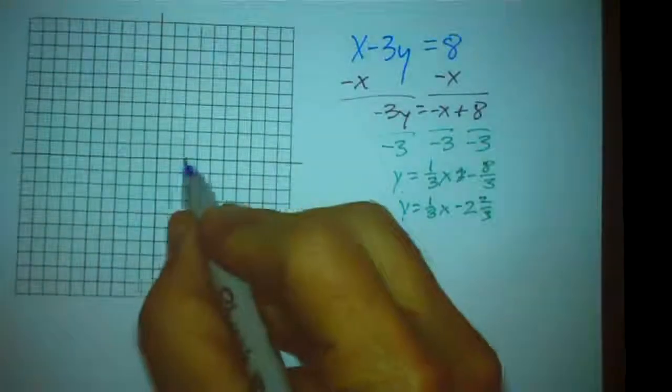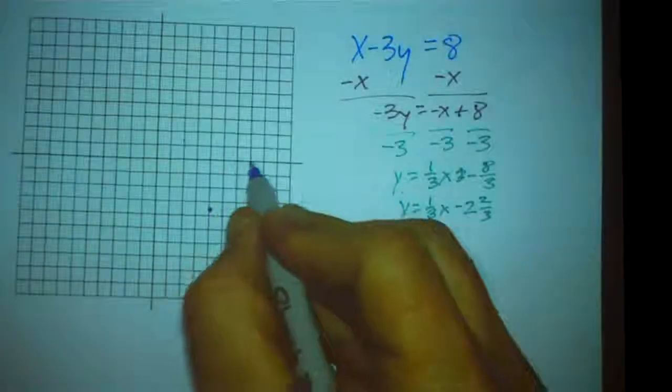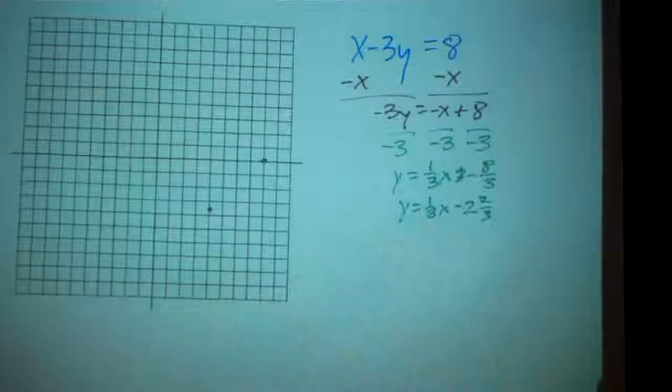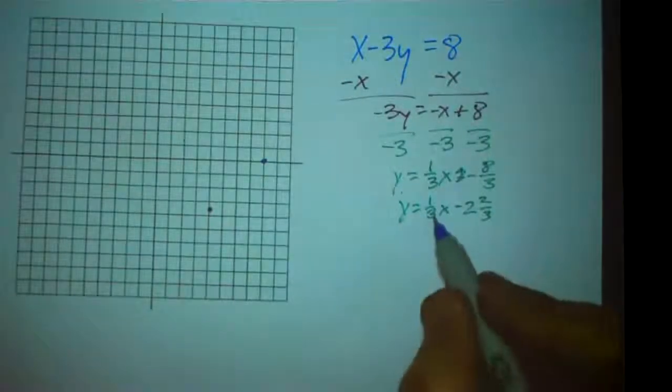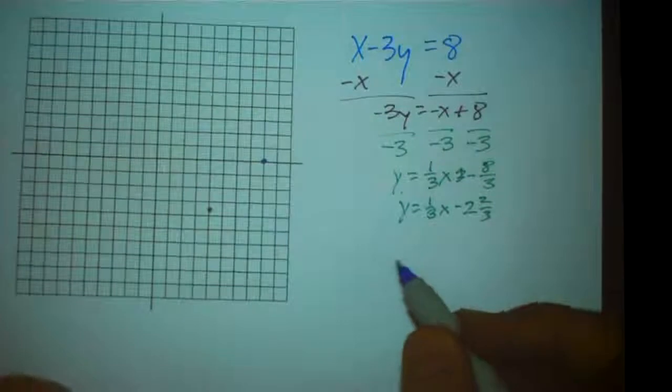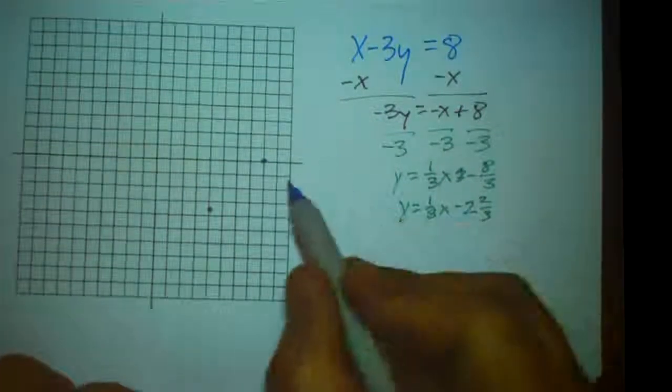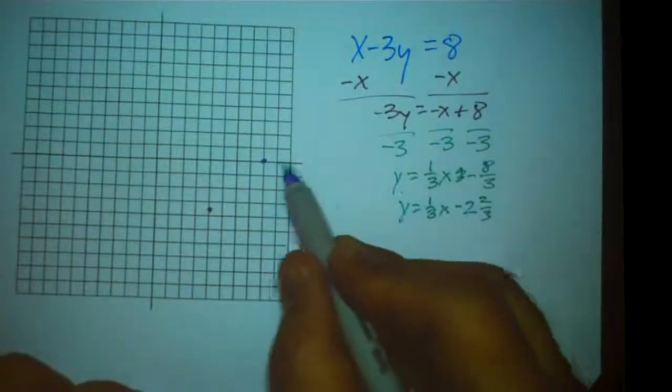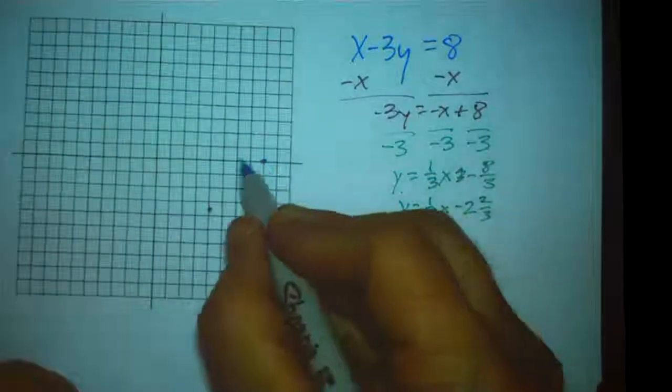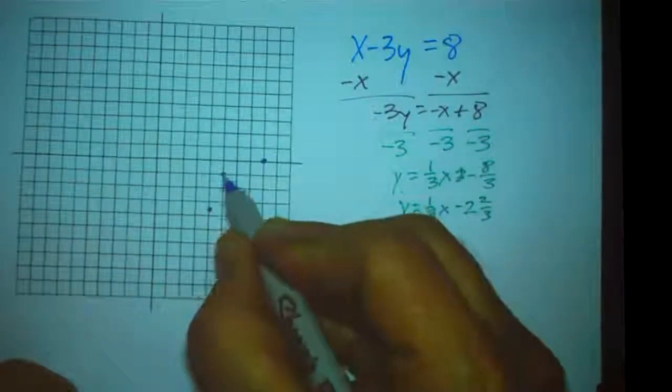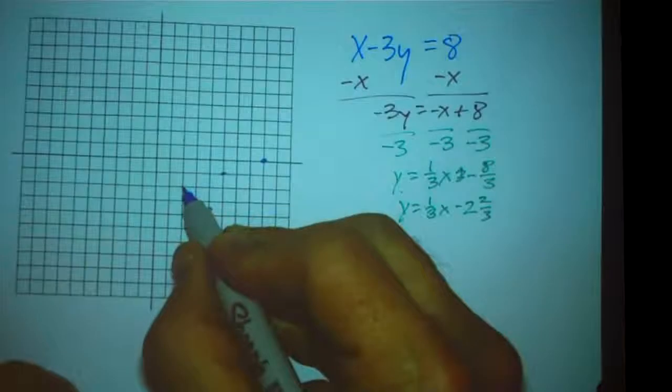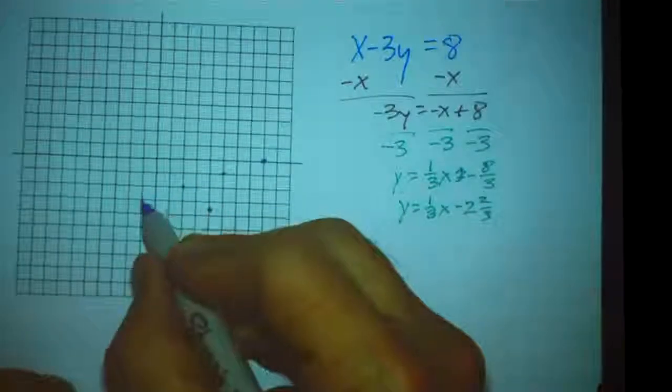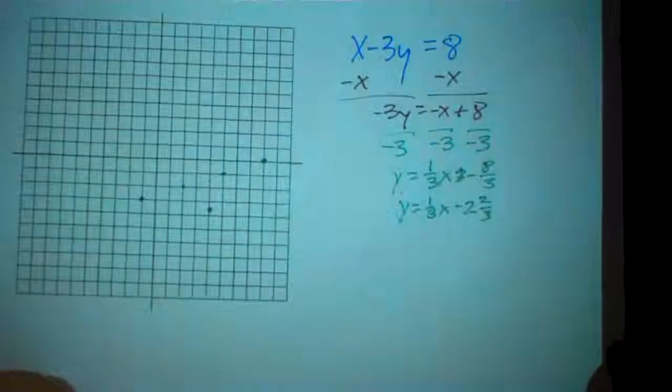So that tells me what the x-intercept is. And so instead of starting from the y-intercept, I can start from the x-intercept. So let's do that. Let's go to 1, 2, 3, 4, 5, 6, 7, 8. This point right here. And now I can use my slope of 1 third as x increases by 3. Whoops, can't go in that direction. So as x decreases by 3, y is going to decrease by 1. Decreasing by 3, y decreases by 1. Decreasing by 3, y decreases by 1.